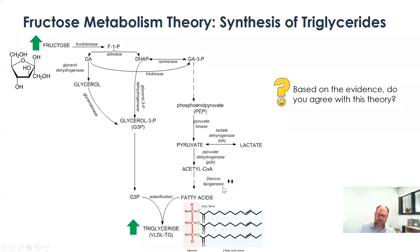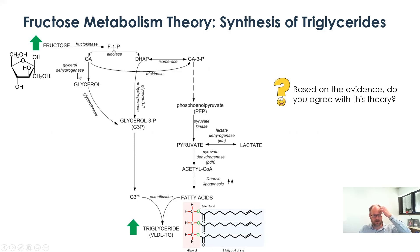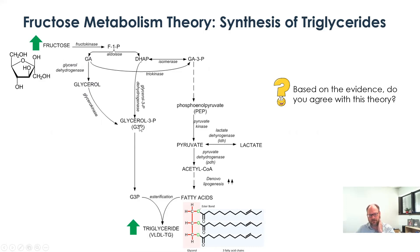Another proposed mechanism is that fructose metabolism can directly feed the synthesis of fatty acids and triglycerides. The glyceraldehyde produced from fructose catabolism can be converted to glycerol via a dehydrogenase enzyme, and then glycerol kinase converts it to glycerol-3-phosphate, providing the glycerol backbone needed to build triglycerides.